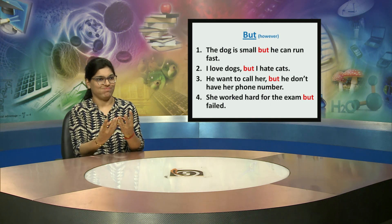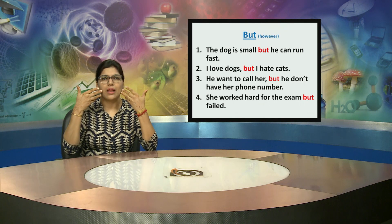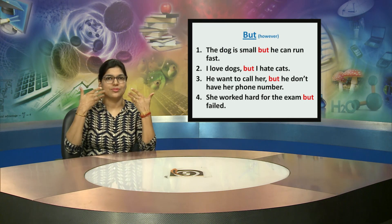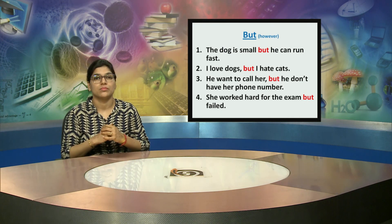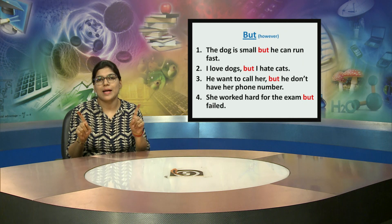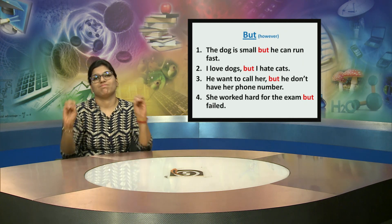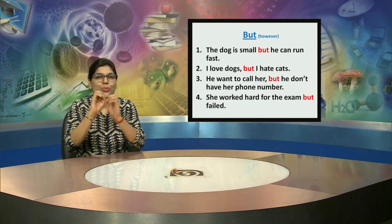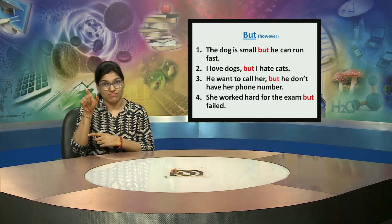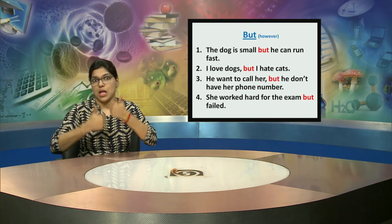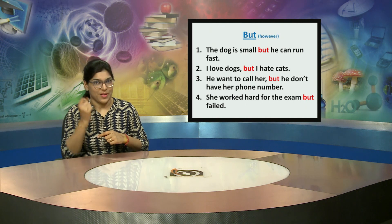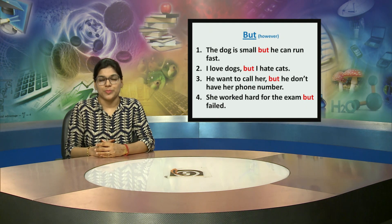Second: I love dogs but I hate cats. Here you have one positive sentence and one negative sentence connected by the word 'but.' Third: He wants to call her but he doesn't have her phone number. Fourth: She worked hard for the exam but failed. This is another example of a positive and negative sentence.